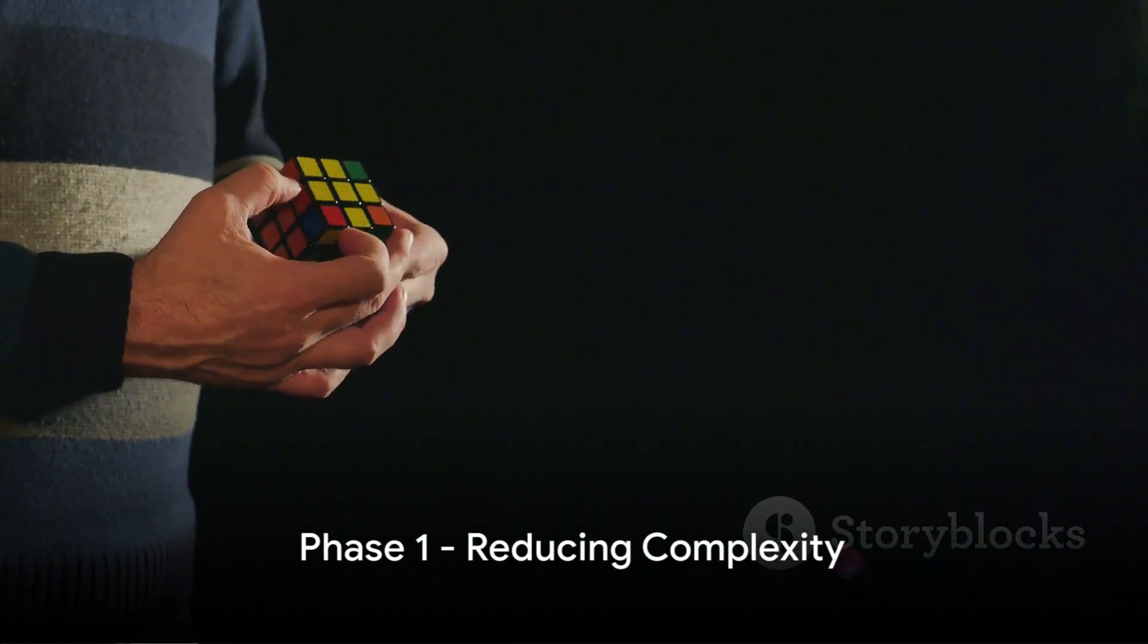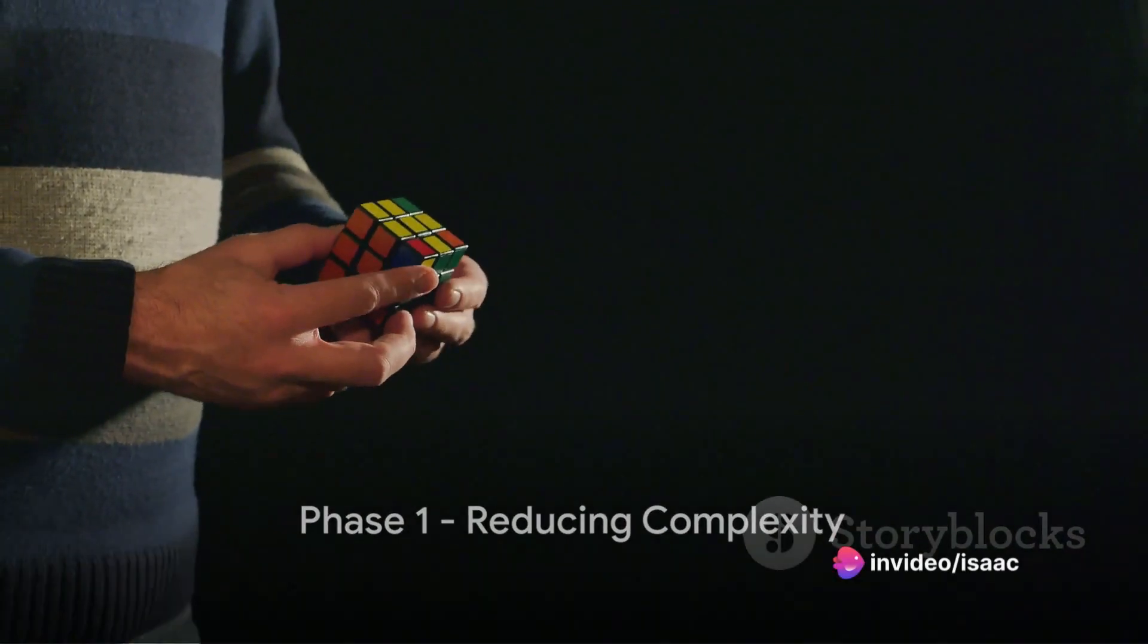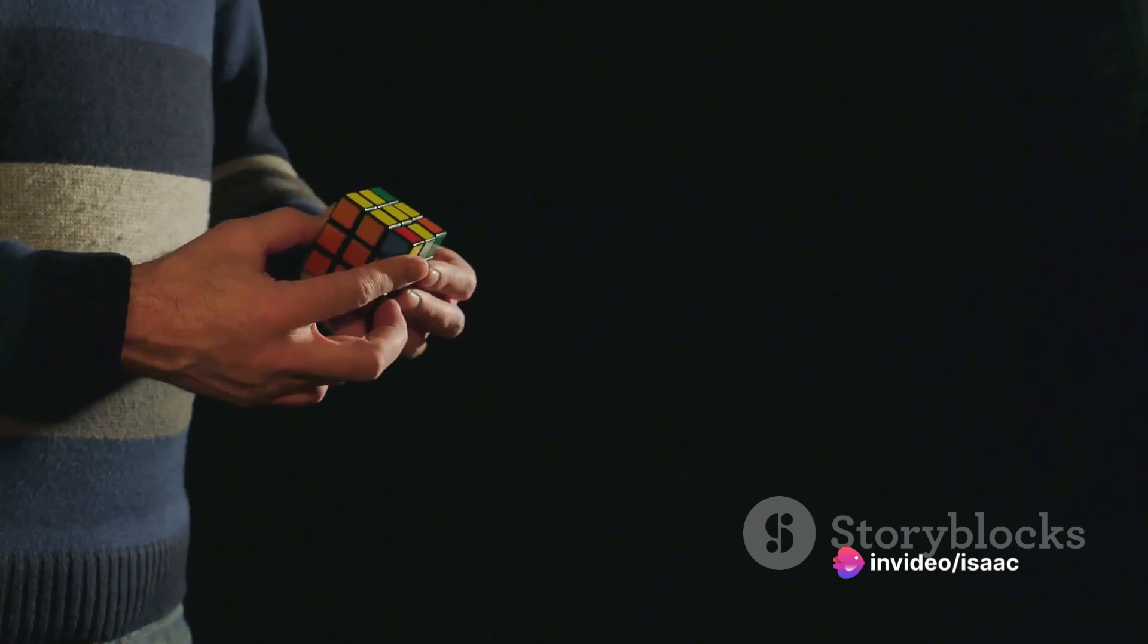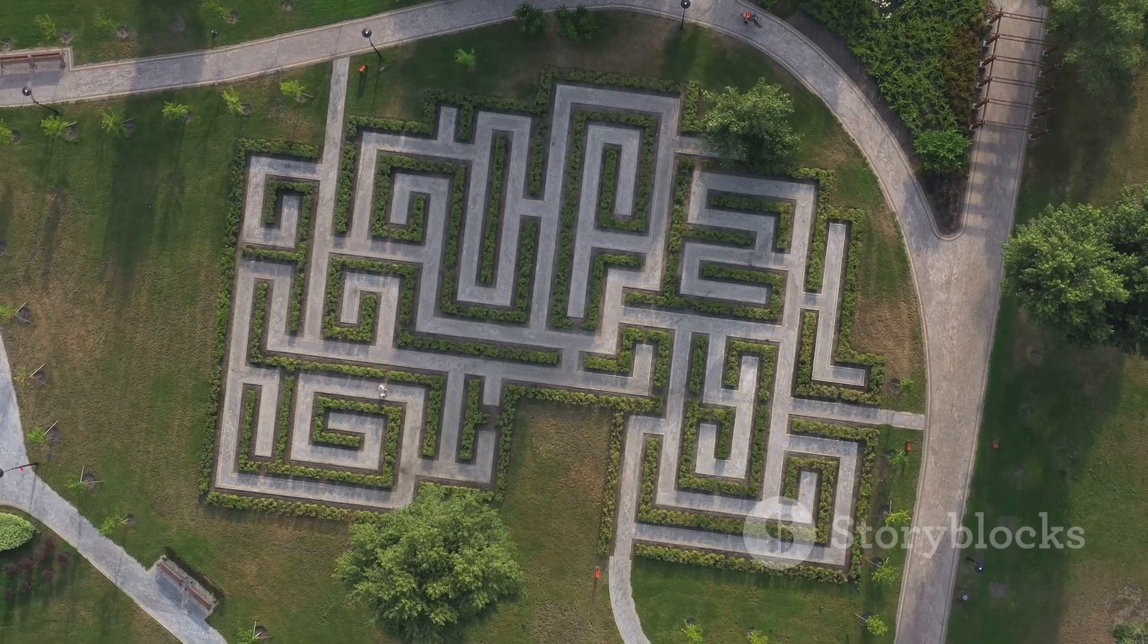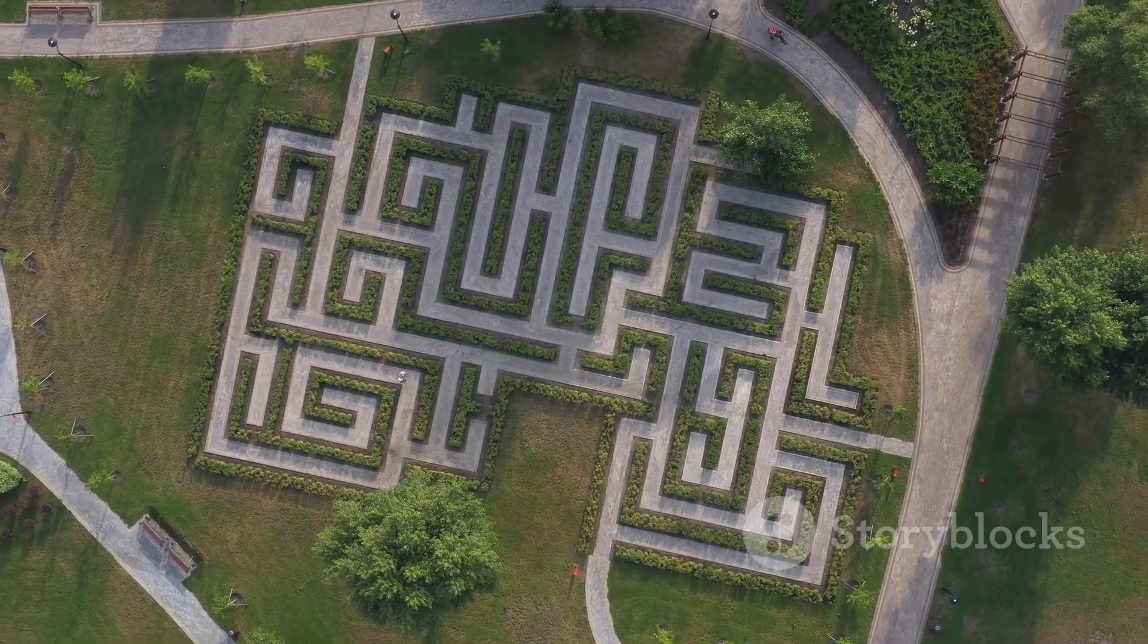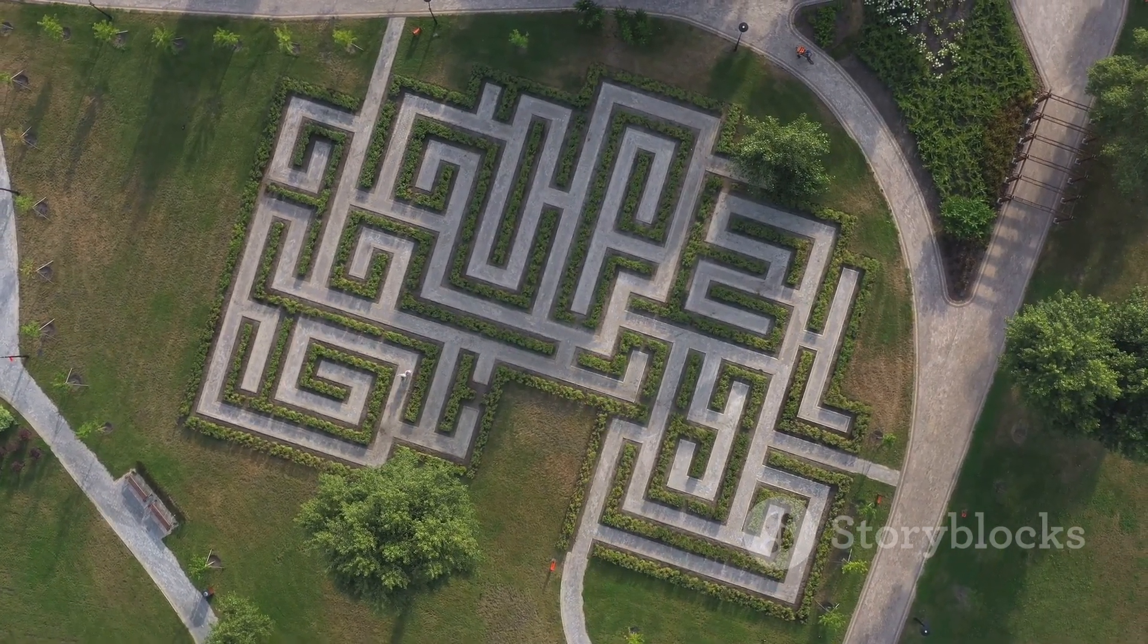In the first phase, the algorithm aims to reduce the complexity of the cube. It doesn't solve the cube completely, but it brings the cube to a state that is easier to handle. This is like finding a landmark in the maze, a point from which the path to the exit becomes easier to see.